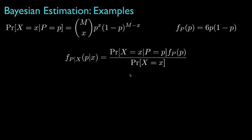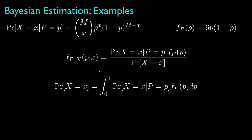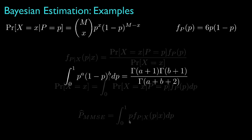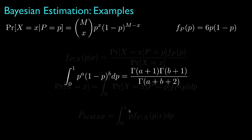To find the minimum mean square error estimator, we'll need to determine the posterior density function, which means we'll need to find the unconditional probability for the observation. We find this by integrating the product of the conditional probability for the observation times the prior. Once we have that, we can find the minimum mean square error estimator by evaluating the expected value of the posterior density, or the conditional mean for the parameter.